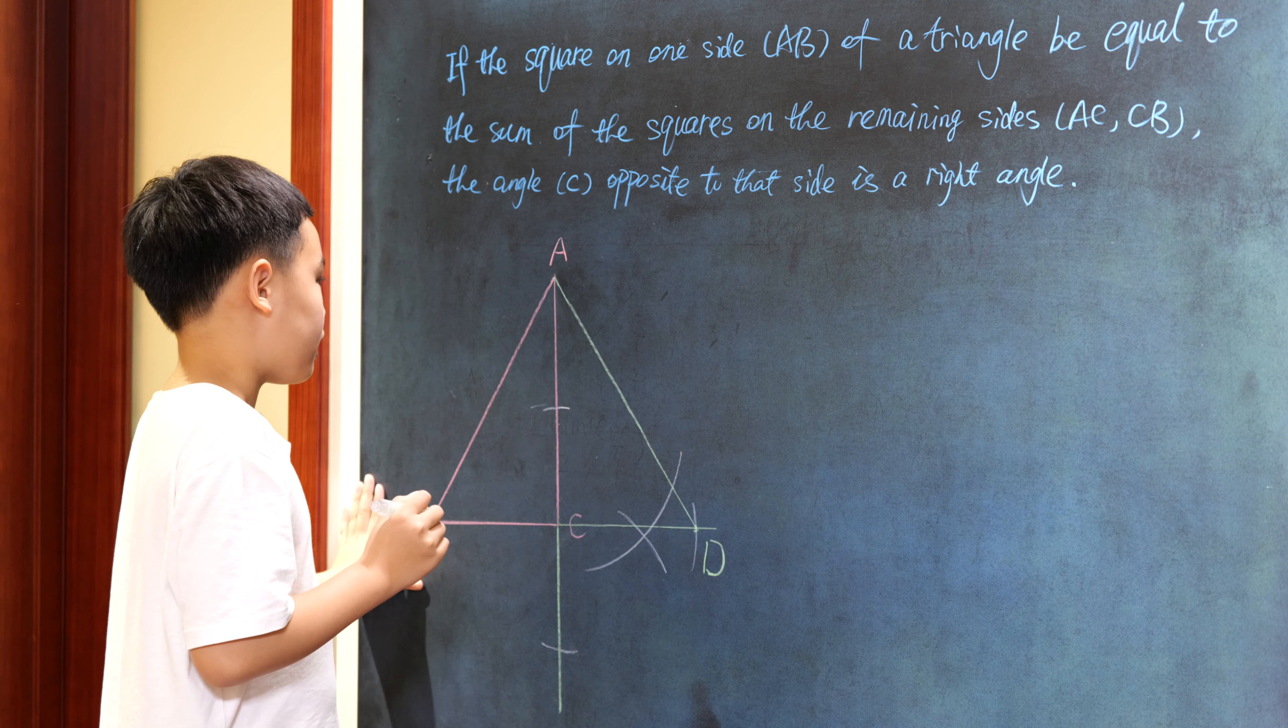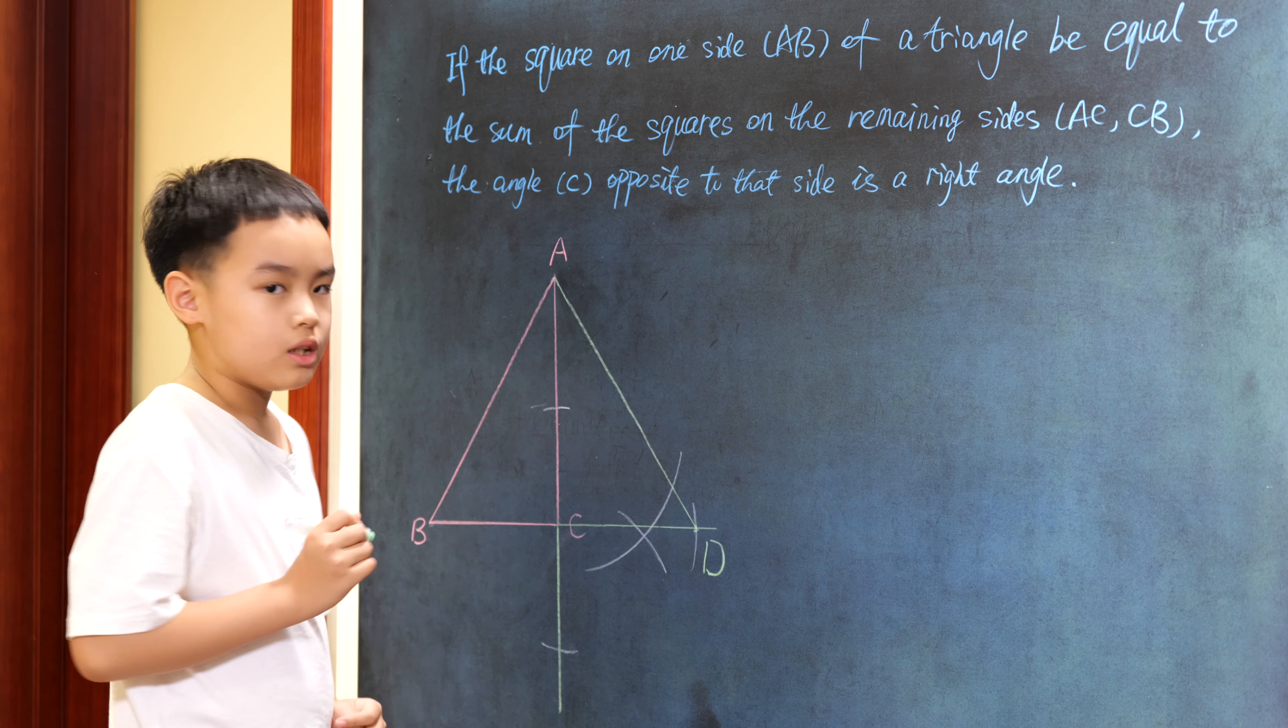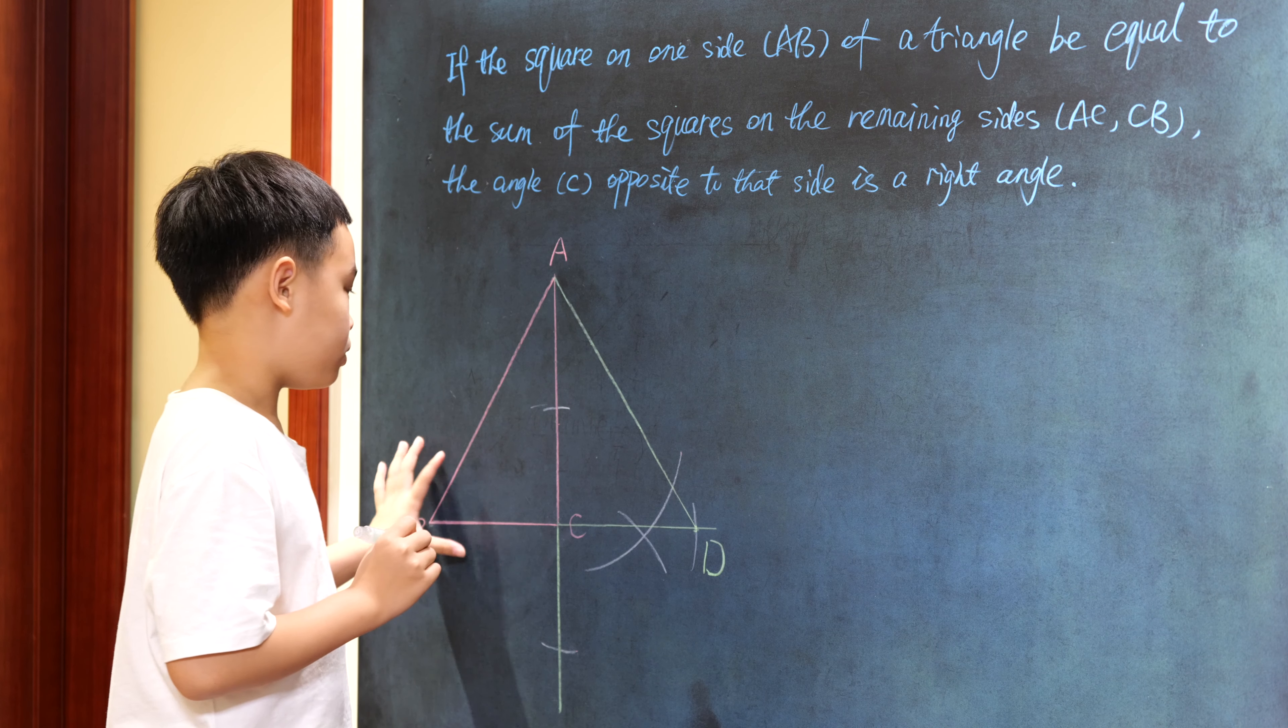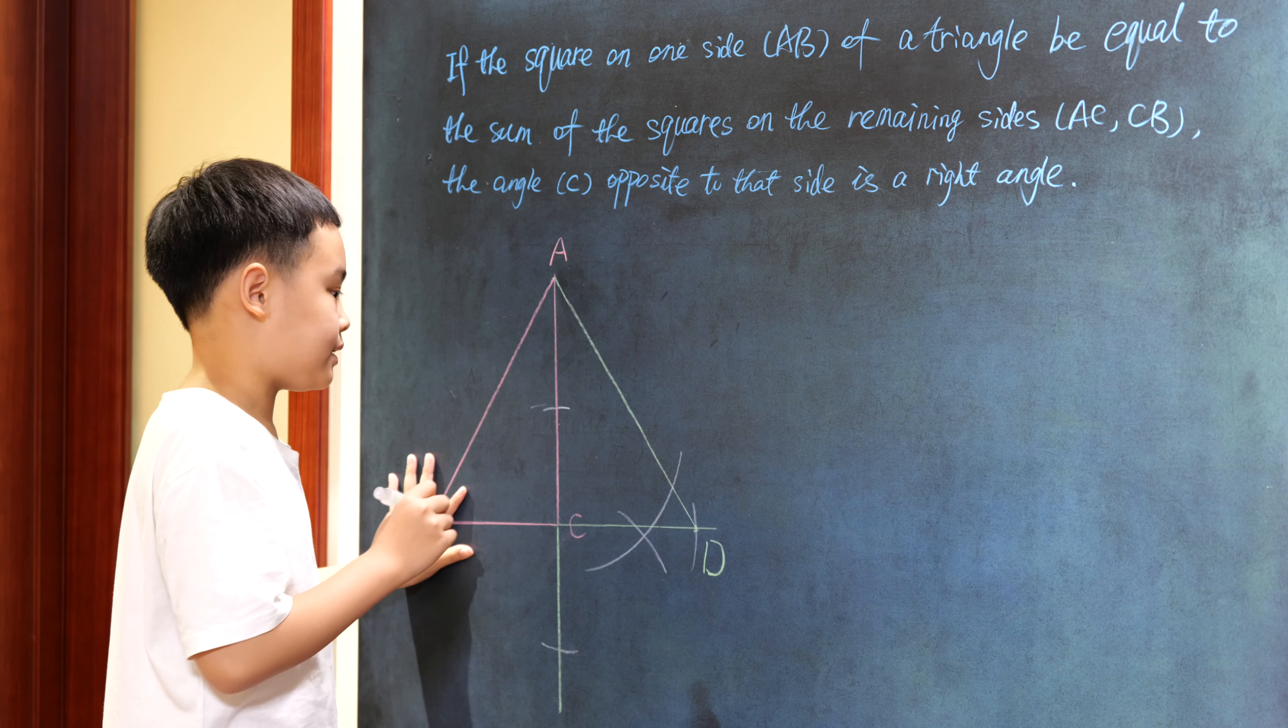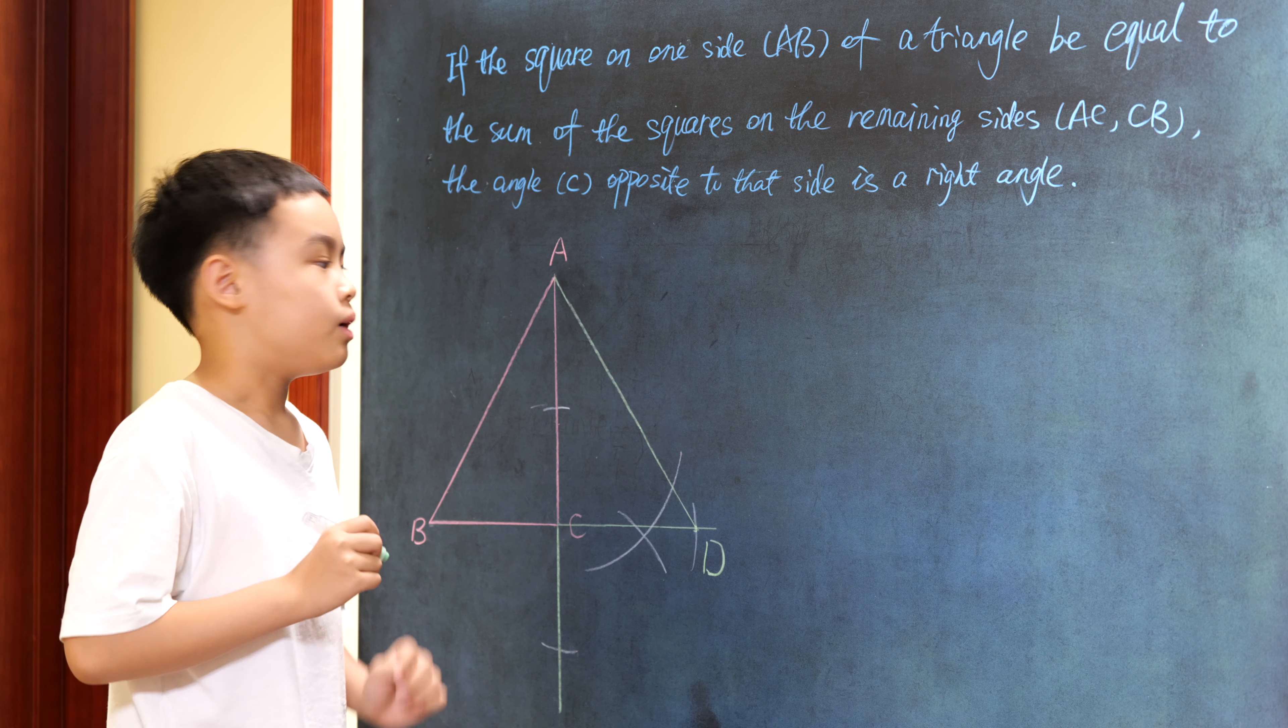So, the square on the line AB shall be equal to the sum of two squares on two lines AC and CD too.